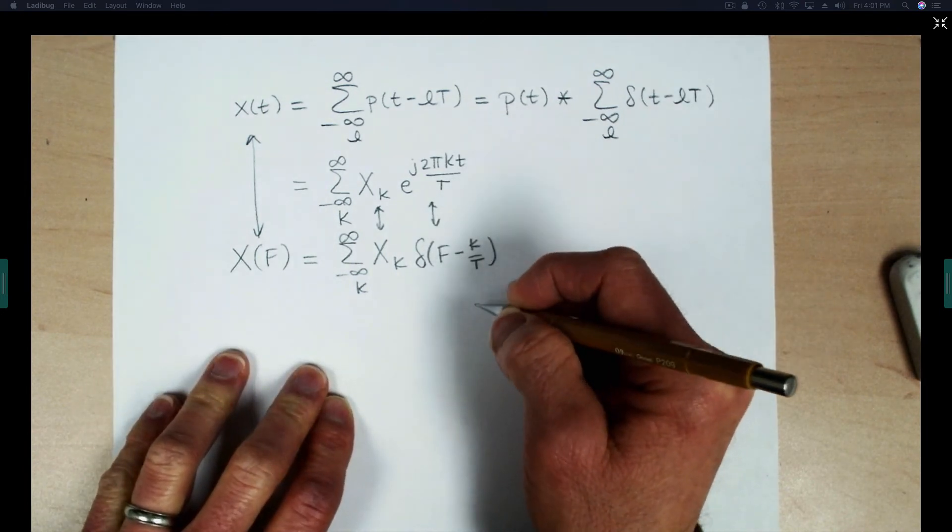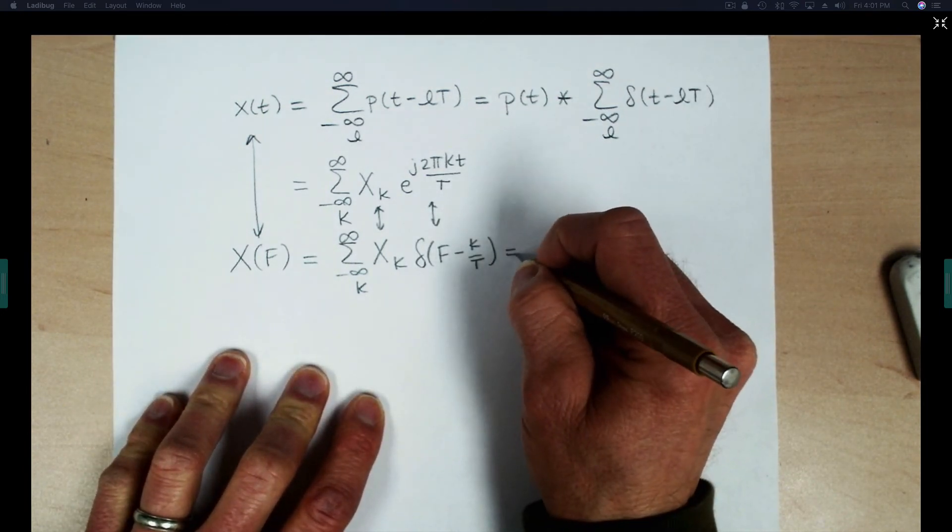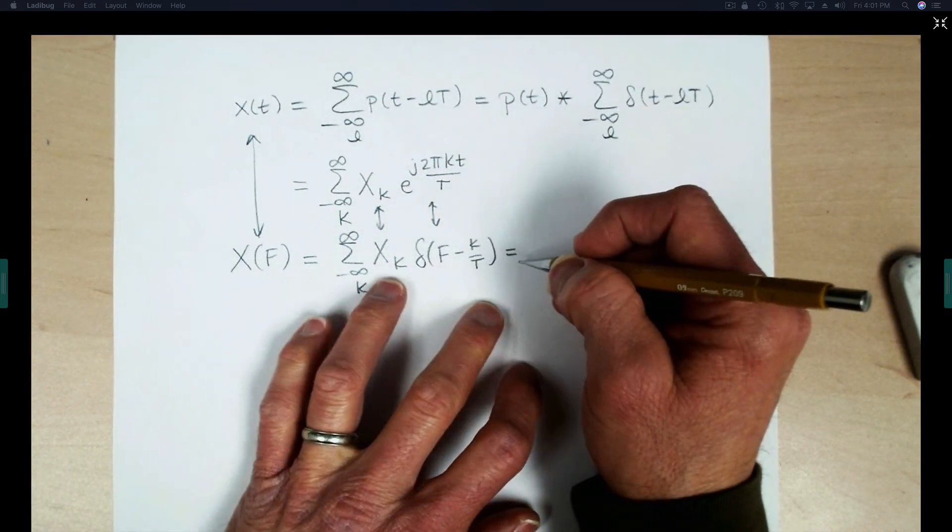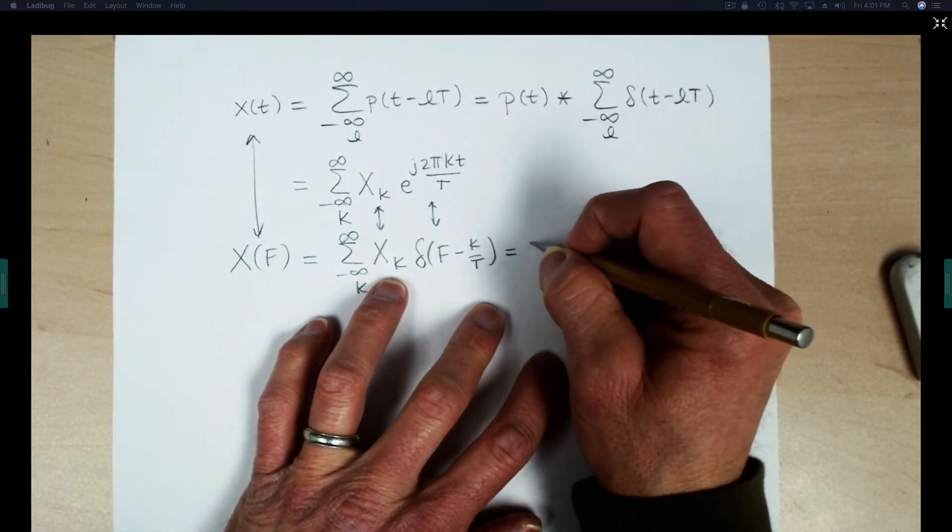Now to complete the example, what we want to do then is substitute the expression for X of K that we derived on the previous page.